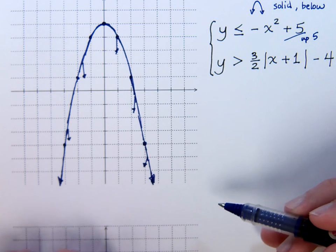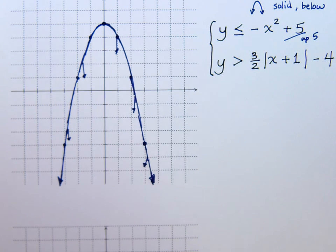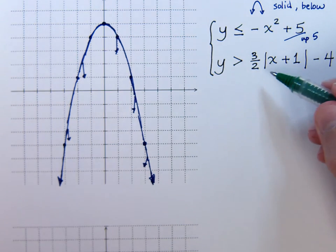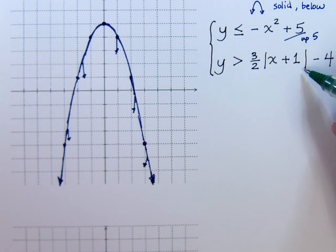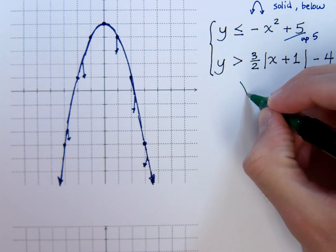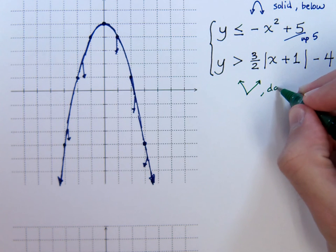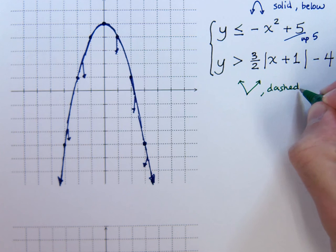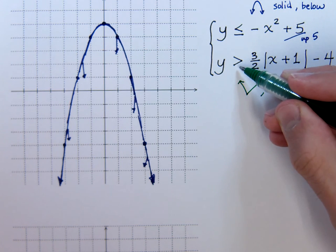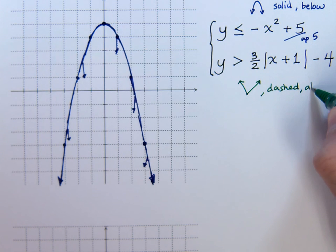Now let's look at the other inequality that we have. We see that this guy is an absolute value, so he has that V shape. The greater than symbol tells me that I'm going to be dashed. And since it's greater than, I'm going to be shading above.